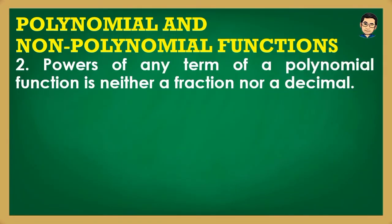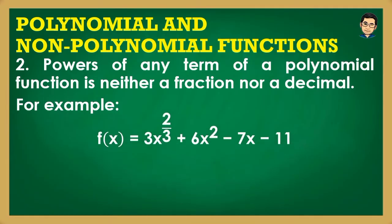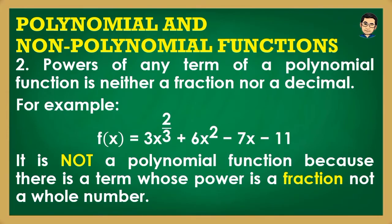Second, powers of any term of a polynomial function must not be a fraction nor a decimal. For example, f(x) = 3x^(2/3) + 6x² − 7x − 11 is NOT a polynomial function because the leading term 3x^(2/3) has a power of 2/3, which is a fraction — not a whole number. Therefore it is considered a non-polynomial function.